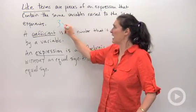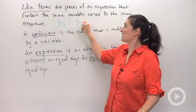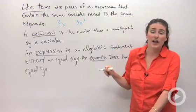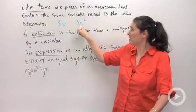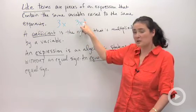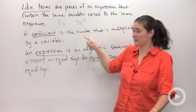Let's say I had 3x and 3x squared. Those are not like terms because I have the same letter. I both have x's, but this one has an x squared. It has a different exponent.